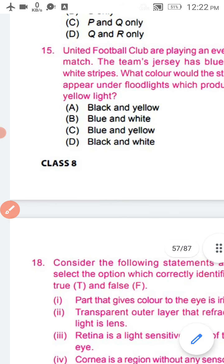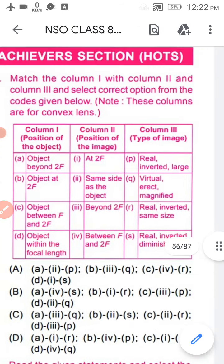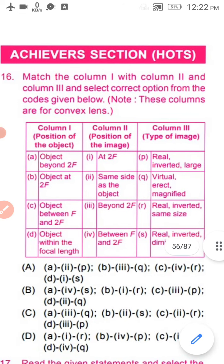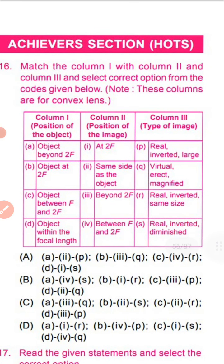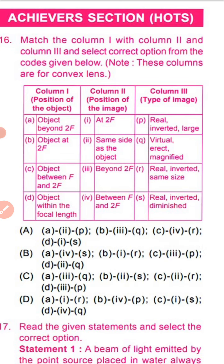Come to question number 16. A table is given. Match column 1 with column 2 and column 3 as selected. Column 1 is the position of the object, column 2 is the position of the image, and column 3 is the type of image. Select the correct option from the codes given below.